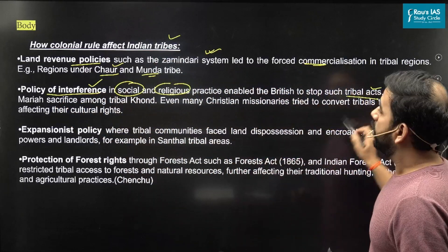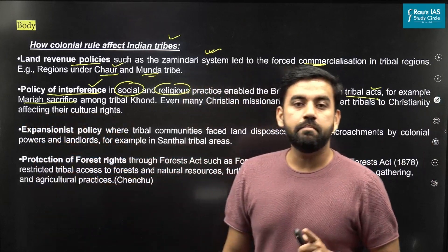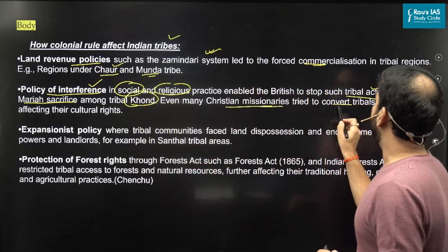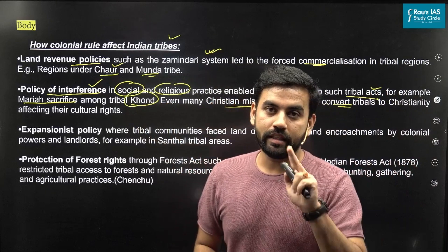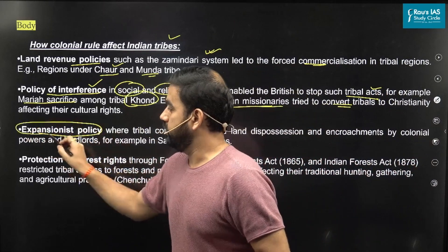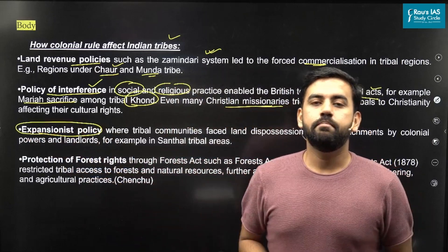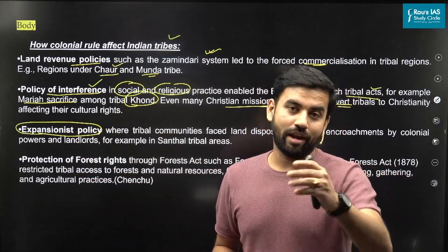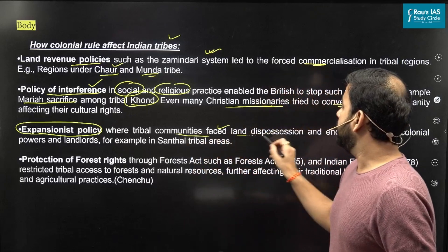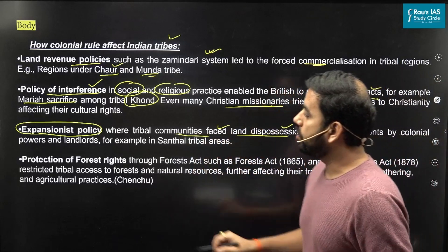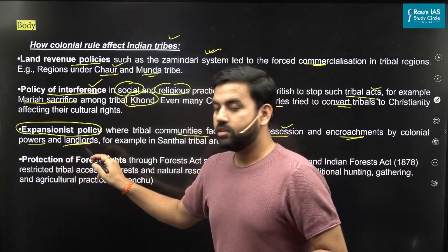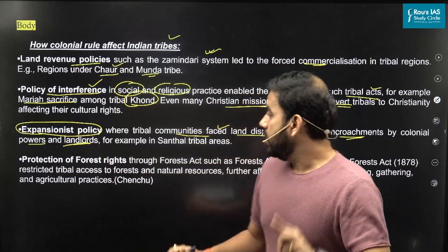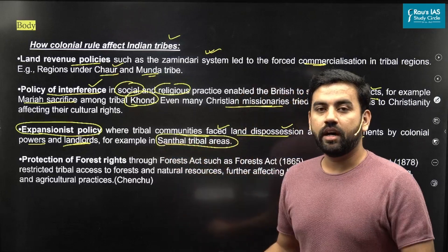Second: the policy of interference in the social and religious practices of the tribes. For example, they tried to restrict the Mariya sacrifice, that is human sacrifice, among the Khond tribe. Christian missionaries also tried to convert tribals against their wishes. Third: the policy of expansionism. Right after the Battles of Plassey and Buxar, the British tried to expand their empire, including into tribal regions. Communities faced land dispossession and encroachment by the colonial power as well as their landlords, who became absentee landlords. One example is the Santhal tribal region where the Santhal Revolt took place.